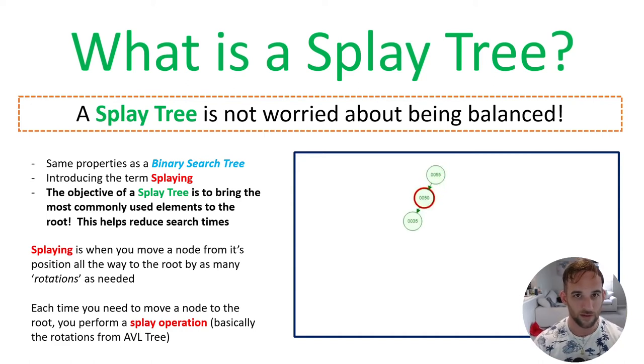It still has the properties of a binary search tree, but also we're going to introduce something called splaying. This is a new term for a splay tree. Splaying is when we move any node from its current position all the way to the root.